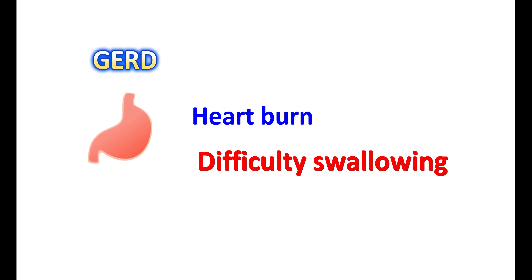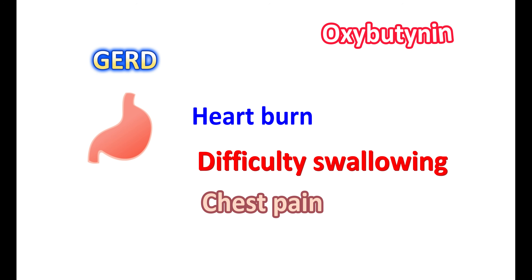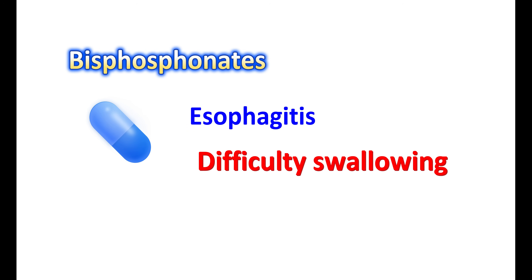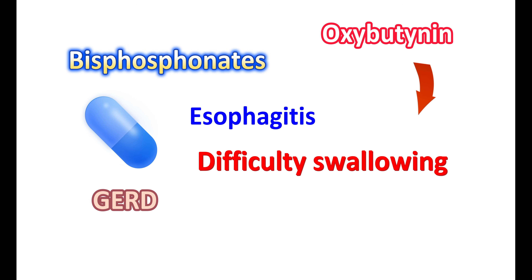GERD — gastroesophageal reflux disorder — is associated with gastric acid reflux, heartburn, difficulty swallowing, sore throat, and even chest pain. In people with GERD, difficulty swallowing is an important symptom that may be complicated by oxybutynin, as it can reduce GI motility and worsen GERD. Similarly, if you are taking bisphosphonates used to treat osteoporosis, they may increase esophageal irritation and difficulty swallowing. Use of oxybutynin may further complicate this condition, so use it very carefully if you have a history of GERD or are using bisphosphonates.